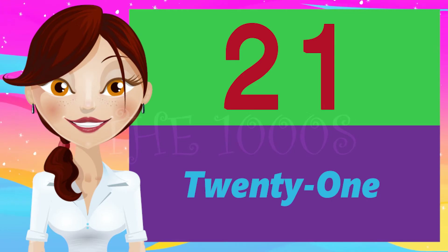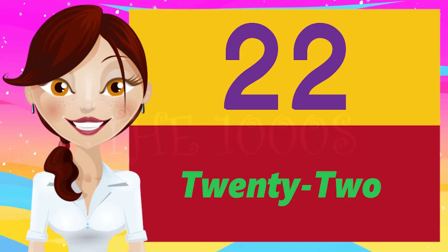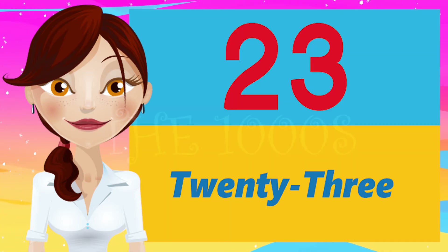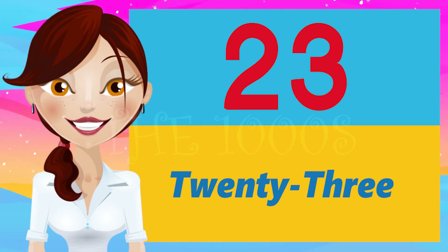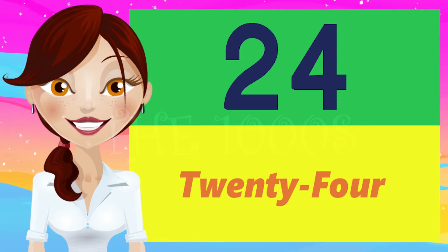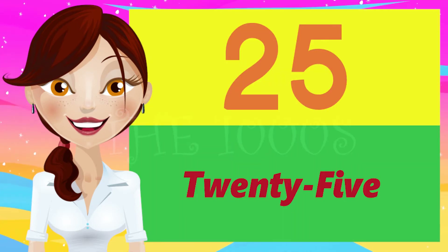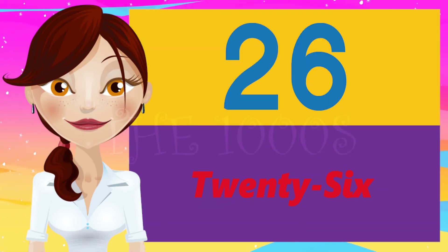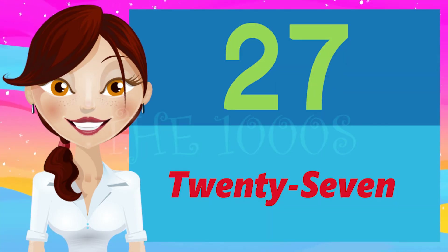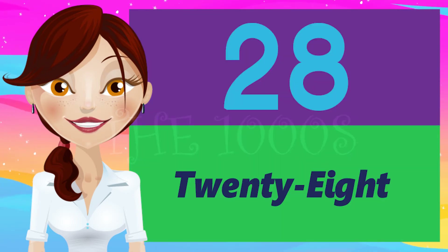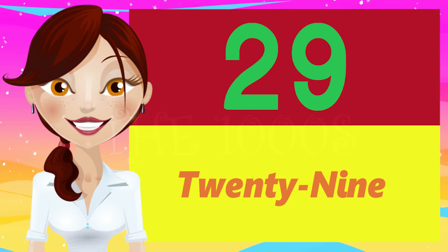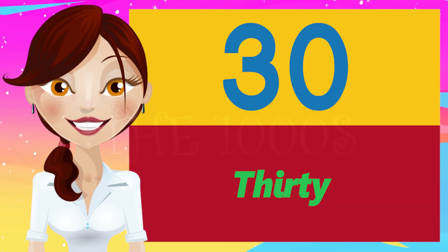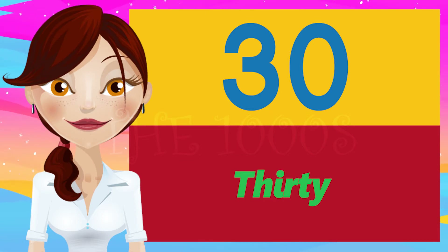Twenty-one (T-W-E-N-T-Y-O-N-E) 21. Twenty-two (T-W-E-N-T-Y-T-W-O) 22. Twenty-three (T-W-E-N-T-Y-T-H-R-E-E) 23. Twenty-four (T-W-E-N-T-Y-F-O-U-R) 24. Twenty-five (T-W-E-N-T-Y-F-I-V-E) 25. Twenty-six (T-W-E-N-T-Y-S-I-X) 26. Twenty-seven (T-W-E-N-T-Y-S-E-V-E-N) 27. Twenty-eight (T-W-E-N-T-Y-E-I-G-H-T) 28. Twenty-nine (T-W-E-N-T-Y-N-I-N-E) 29. Thirty (T-H-I-R-T-Y) 30.